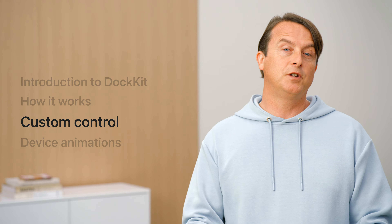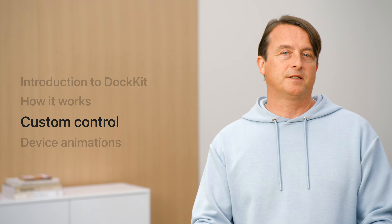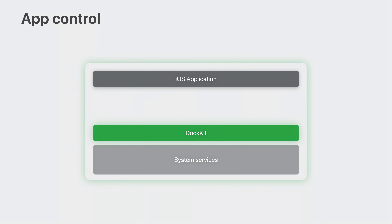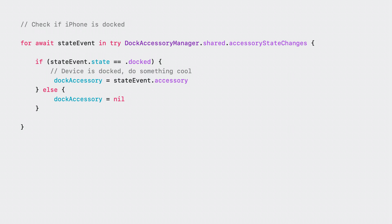However, things get really exciting when you integrate with Docket to deliver new features your customers will love. This will involve obtaining a reference to the dock. From there, you can choose to change the framing, specify what is being tracked, or directly control the motors after stopping system tracking. First, you will want to register dock accessory state changes. A docking or undocking notification occurs when a person docks or removes the iPhone from a compatible dock accessory. The notification is a prerequisite for modifying the tracking behavior. You can query the state of the dock through the Dock Accessory Manager state events. The only relevant states are docked and undocked. The connectivity is managed by Docket itself. The docked state also means that iPhone is connected to the dock via the Docket protocol.